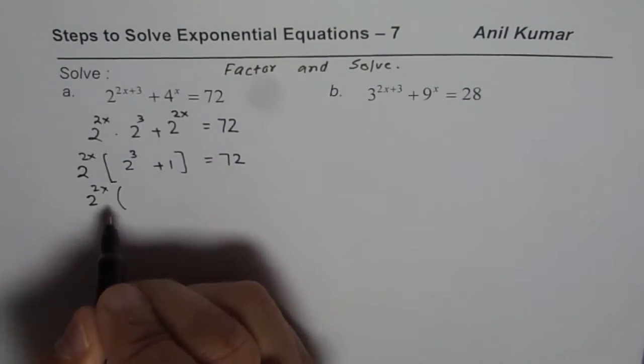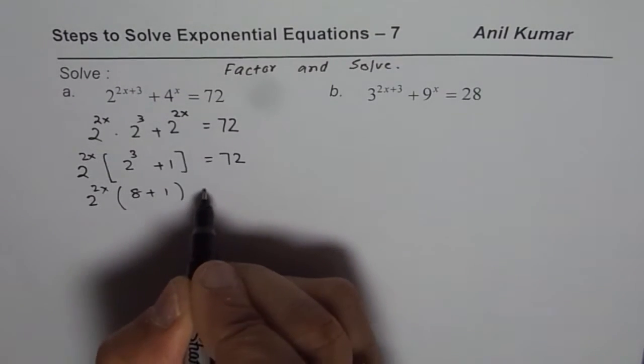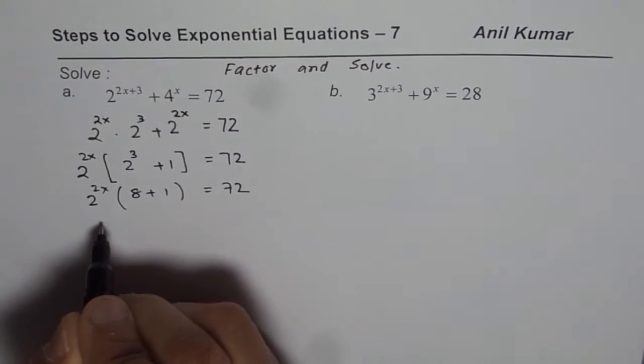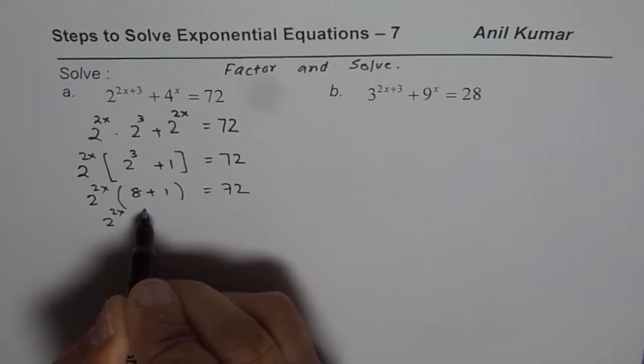Now we have 2 to the power of 2x and what is 2 to the power of 3? It is 8.